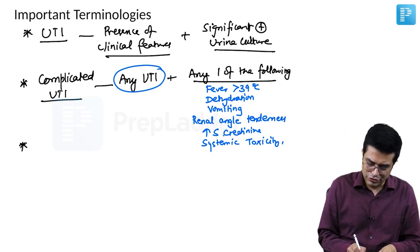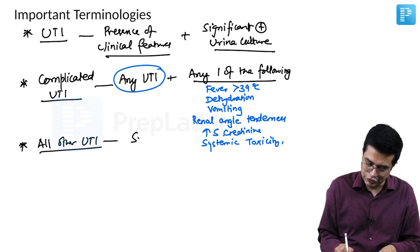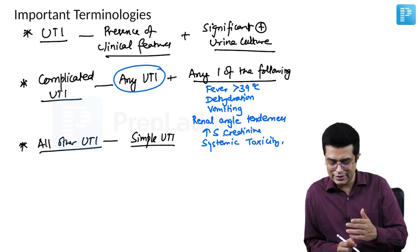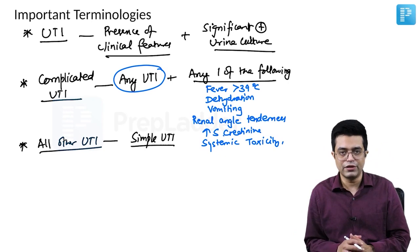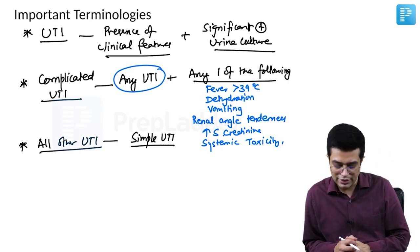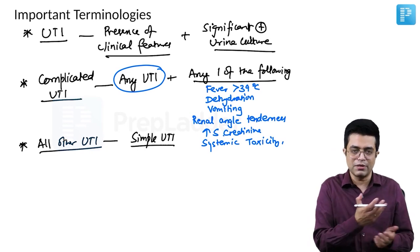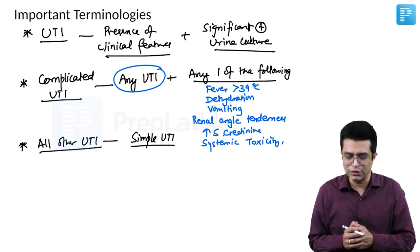There is definition for simple UTI also but remember all others UTI are called as simple UTI. Simple UTI will be the ones where there is low grade fever, there are features of urgency, hesitancy, etc., but there will be no rise in serum creatinine, no high grade fever and no signs of systemic sepsis. That will be called as simple UTI. So better is always remember the definition and criteria for complicated UTI. The other ones are simple UTI.